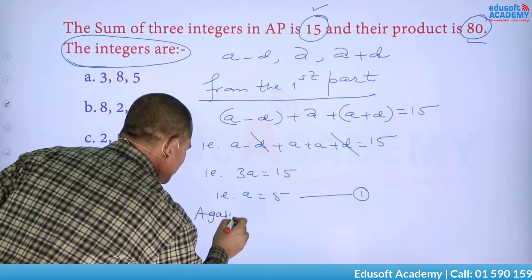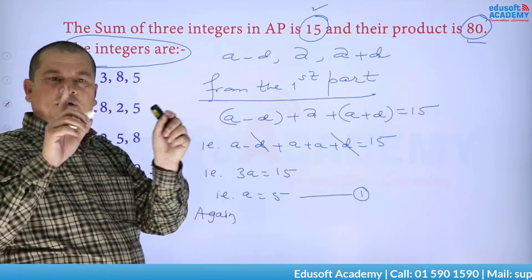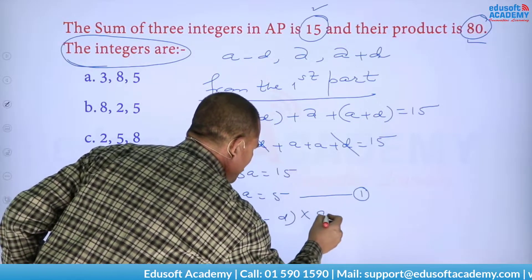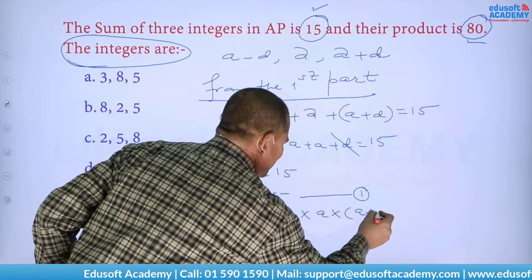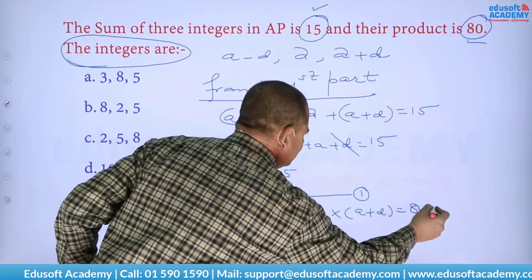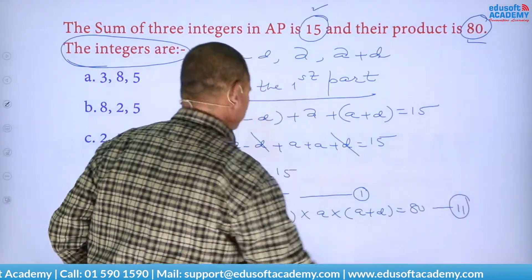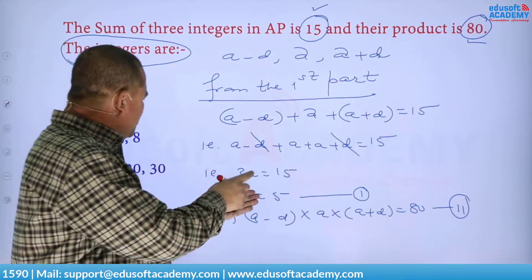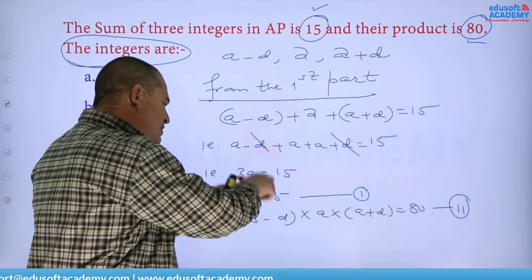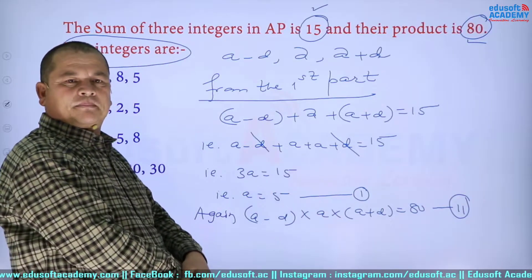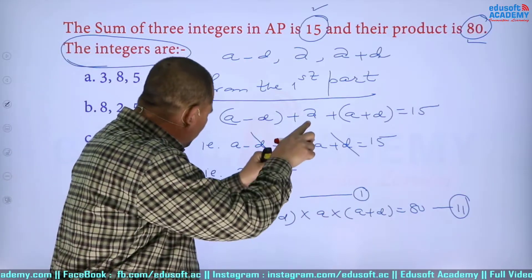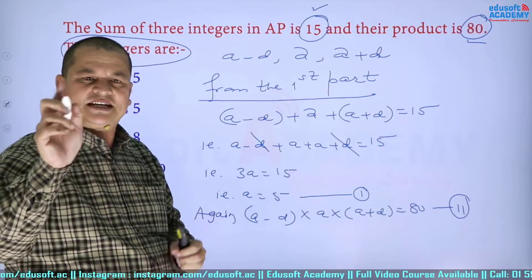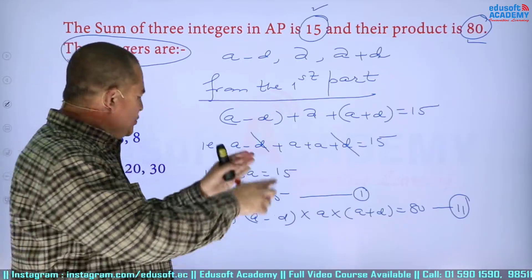From the second part of the question, their product is 80. To get the value of d, substitute the value of a into equation number two. Do substitute the value of a and get the value of d. Can you find the value of d?